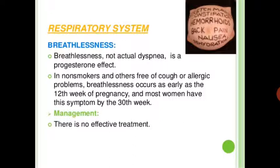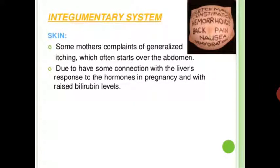Respiratory symptoms: breathlessness — not actual dyspnea — is a progesterone effect. In non-smokers and those free of cough or allergic problems, breathlessness may appear as early as the 12th week of pregnancy, and most women have these symptoms by the 30th week. Management: there is no effective management. Next is the integumentary system — skin. Some mothers complain of generalized itching, which often starts over the abdomen.